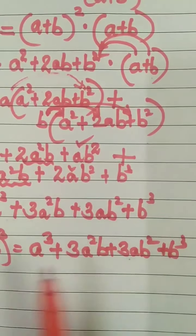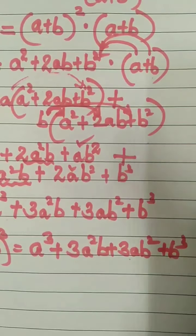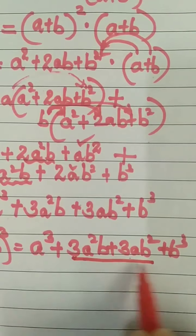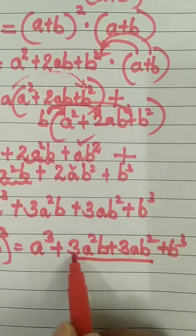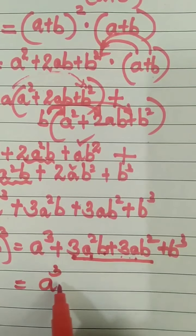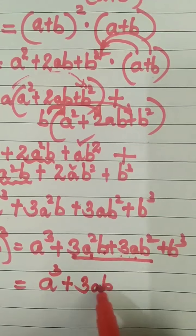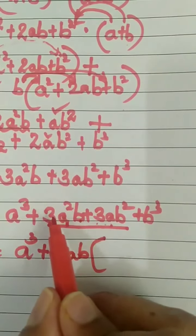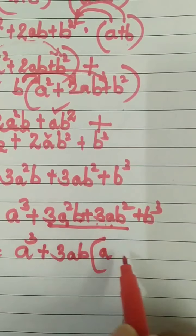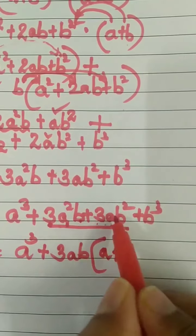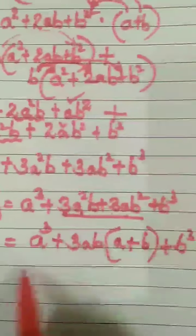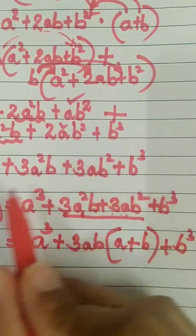You are going to use this expansion formula; you will not do this big long process. Also, there is one more thing: from the middle two terms, 3 is common, one a is common, one b is common. So it can also be written taking 3ab common. But we will solve by writing the standard expansion formula.